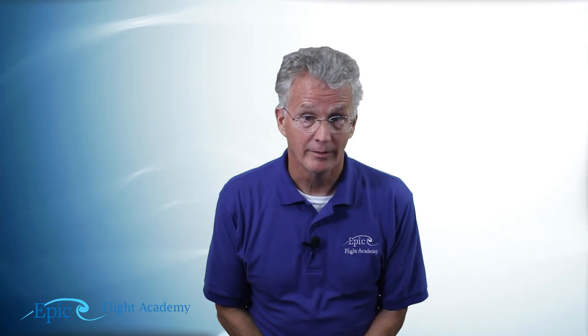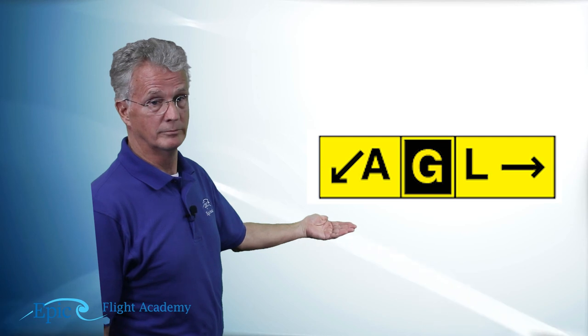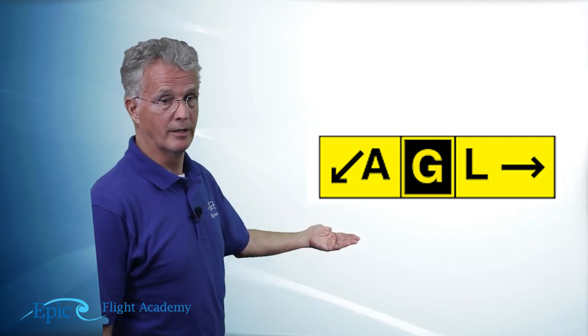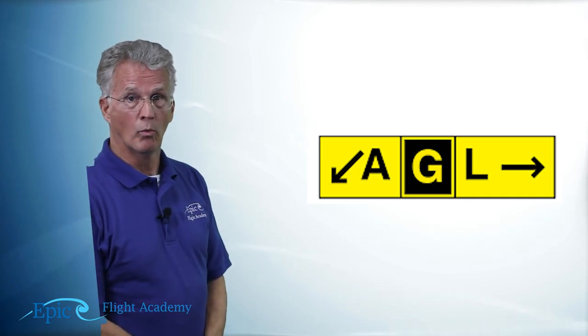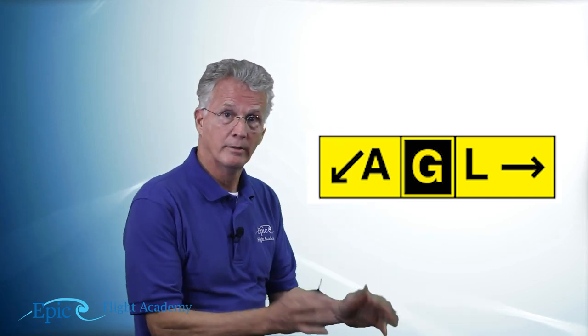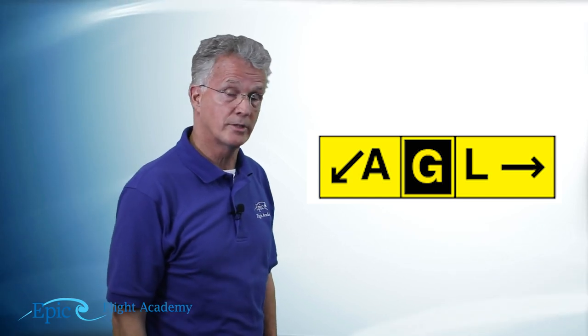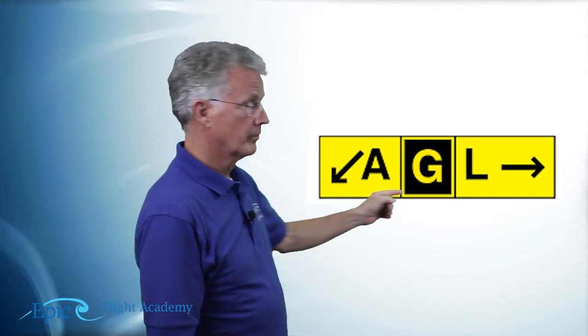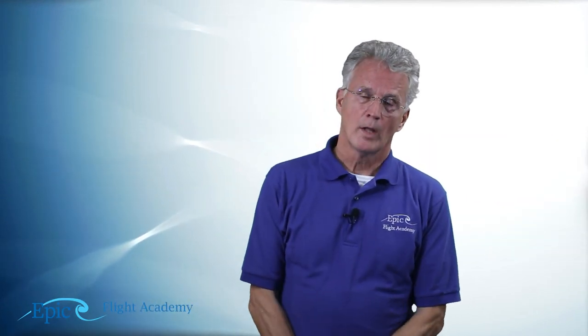Take a look at this final sign. This one combines yellow and black. Look at this. Did you see that? G for golf in the middle. A for alpha is on your left. L for Lima is on your right. What is it telling me? Yellow on black is where I'm at. I am on taxiway Golf. And if I wanted to get to taxiway Lima, I would turn right.